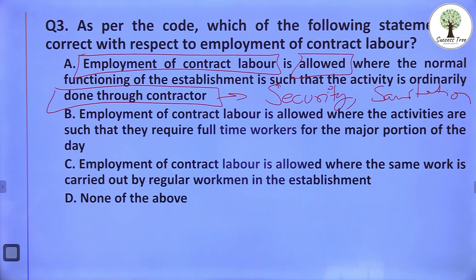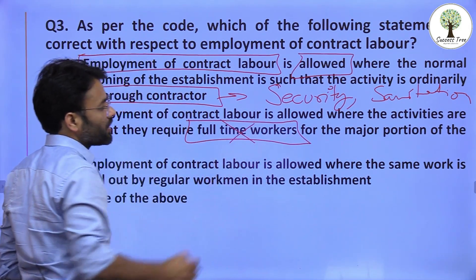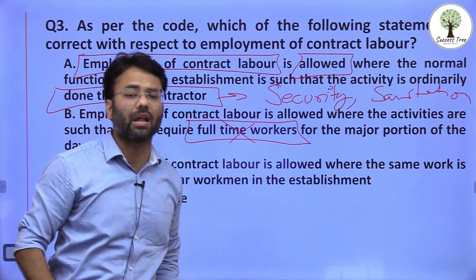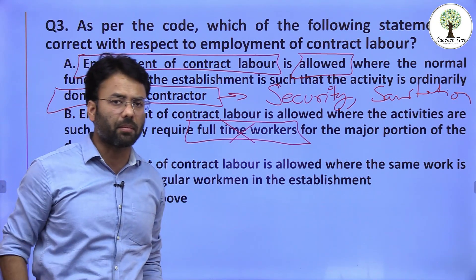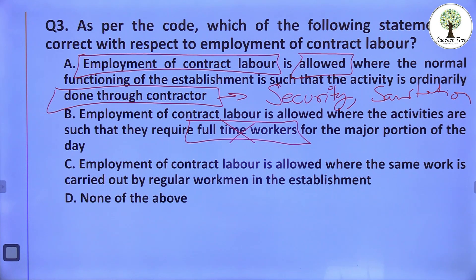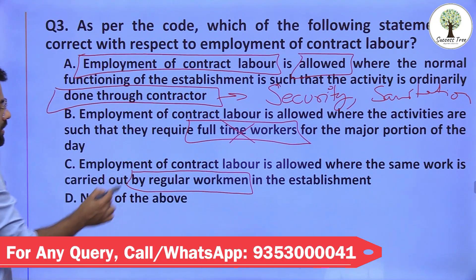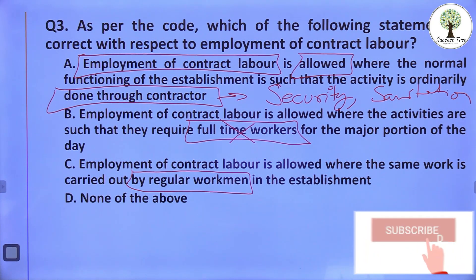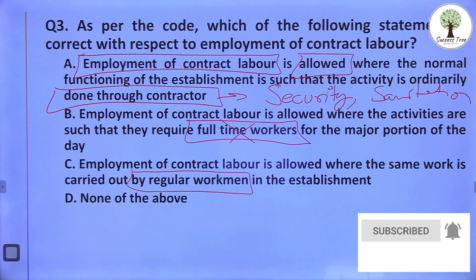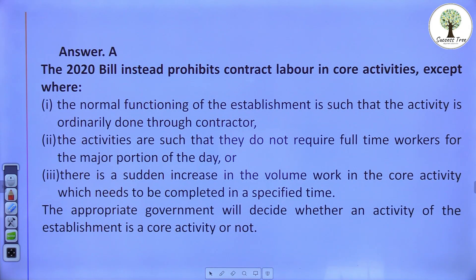The second statement says contract workers can be hired where activities require full-time workers — but this is incorrect. Where full-time workers are required, you cannot hire contract workers; that is a similar provision in the Contract Labour Regulation and Abolition Act and also in the new labour code. Option C says contract workers can be allowed where a regular worker is already working — that is also incorrect, as where a regular worker is working, only a regular worker should work. So option A is the correct answer as per the new code.